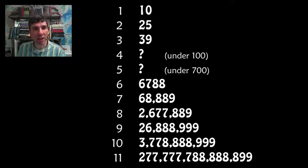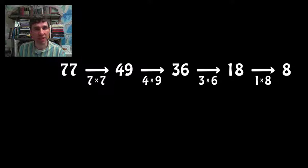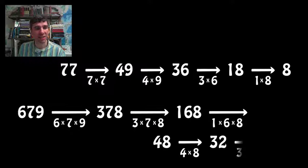Are you ready for the two answers for 4 and 5? Here they are. The lowest number that has a multiplicative persistence of 4 is 77. There's the answer. The lowest number that has a multiplicative persistence of 5 is 679. There it is.